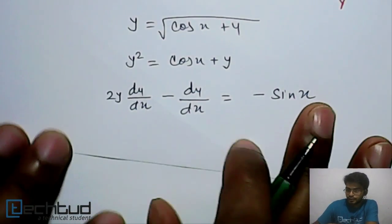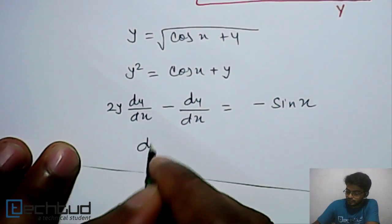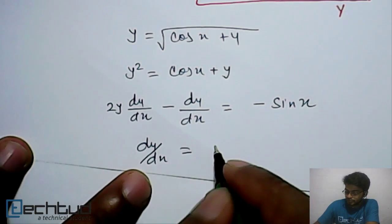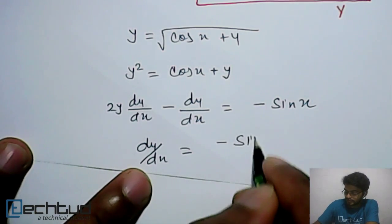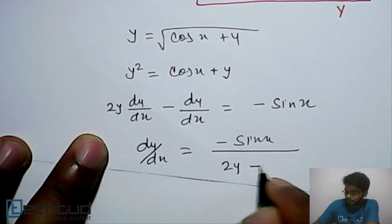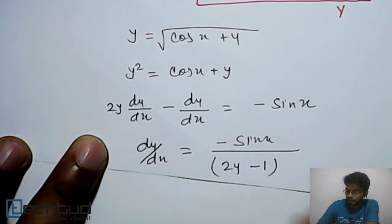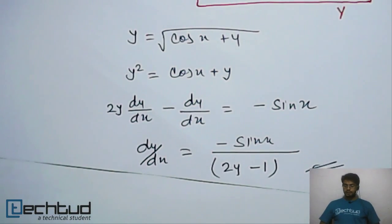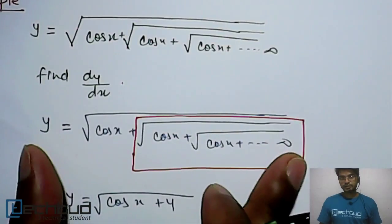Now dy/dx will equal—this will be divided—minus sin x upon the common factor of this, which is 2y minus 1. So this is dy/dx of this entire expression.